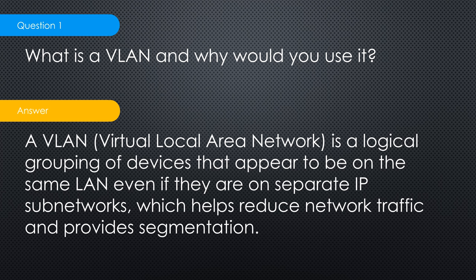Traditionally, if you wanted a separate network you had to have separate hardware — one switch for this, another switch for that, plus routers to connect them, which takes physical space and adds expense. With VLANs, you can create two different networks for two different departments' traffic using the same hardware. The traffic is separated logically through VLAN tags, so the switch ensures no cross-traffic occurs. Layer 3 switches can also act as routers if traffic is allowed between VLANs.